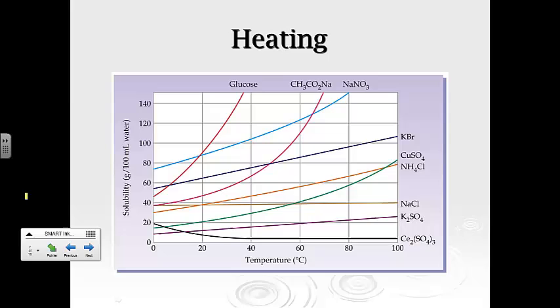Now with heating, this just shows you, and we'll look at some curves on this, but solubility, you've got 100 grams per milliliter and temperature. And it's not uniform, but typically if you look at these, like in particular, if we look at glucose,